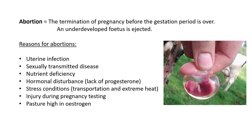Why would abortion happen in a cow? Abortion is the premature termination of pregnancy before the gestation period is supposed to be over. The full gestation period is about 282 days for cows, and abortion is when the pregnancy ends before the baby is supposed to be born — an underdeveloped fetus is ejected from the uterus.